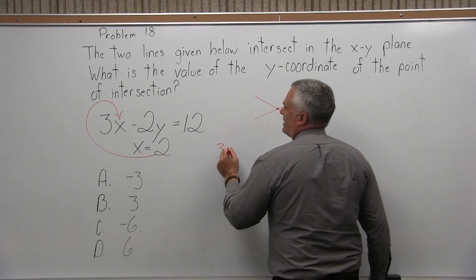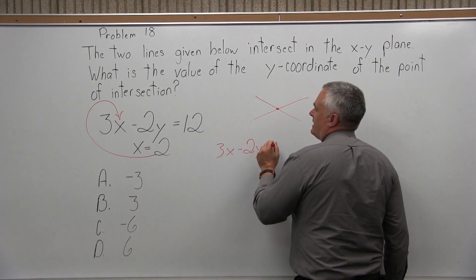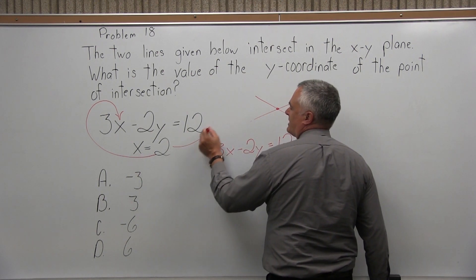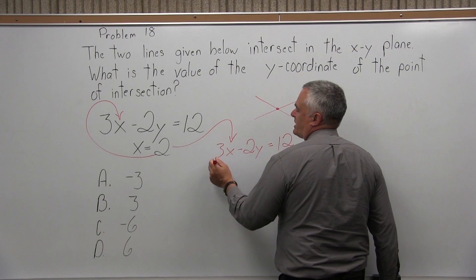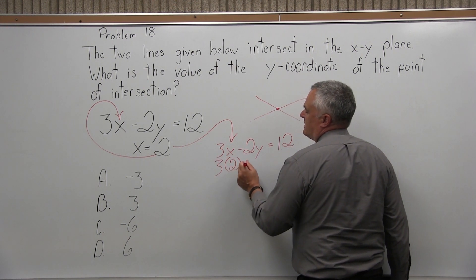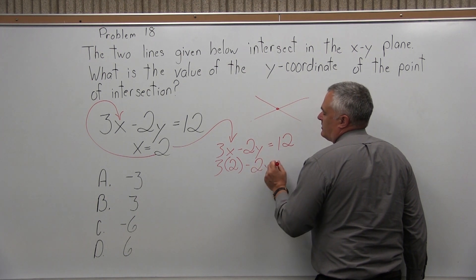I'm going to start with 3x minus 2y equals 12. My goal is to solve for y. I'm going to take that 2 and put it in for x. So 3x, which is really 3 times x, becomes 3 times 2 minus 2y equals 12.